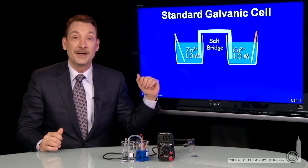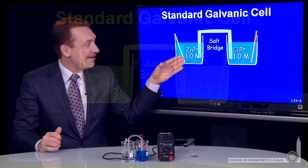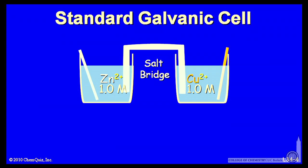So I can set up a system where I have the reducing agent and the oxidizing agent in separate beakers. Here I've done a zinc electrode in zinc solution and a copper electrode in copper solution.